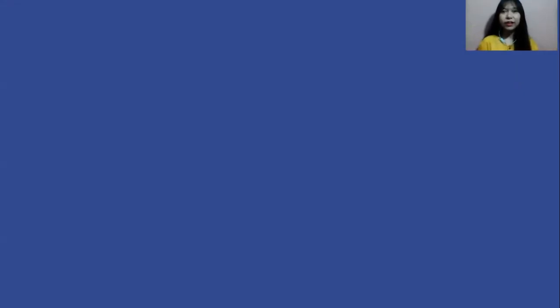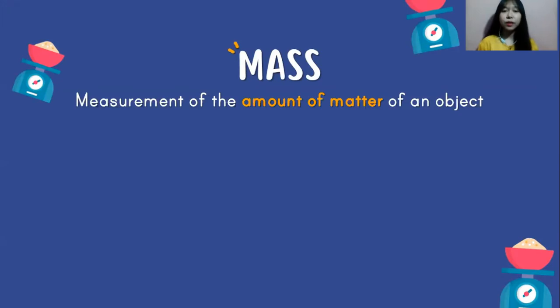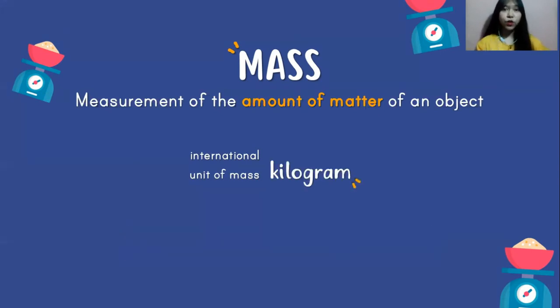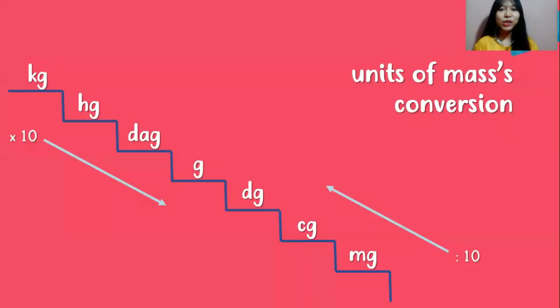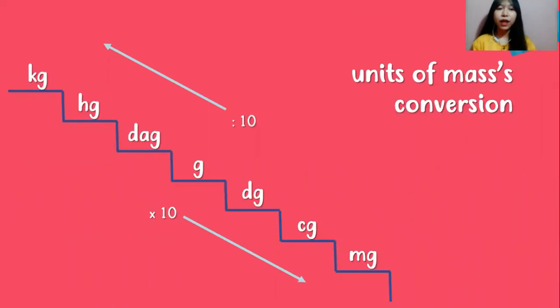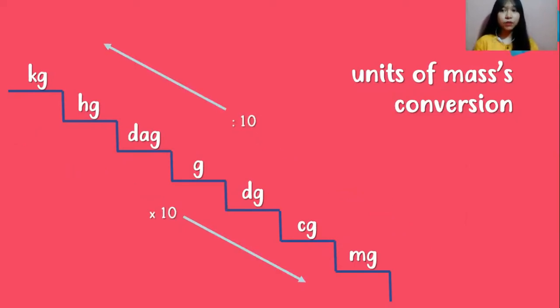We're going to learn about the quantity that describes how heavy something is. Mass! Mass is a measurement of the amount of matter of an object, and the international unit of mass is kilogram. One kilogram is equal to the mass of 1 liter of water at 4 degrees Celsius. For mass unit conversion, I use the same staircase: kilogram, hectogram, decagram, gram, decigram, centigram, and milligram. Every time you go down one step, you multiply the value by 10, and every time you go up one step, you divide by 10.